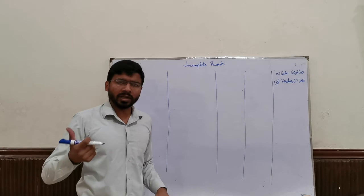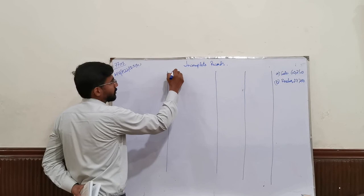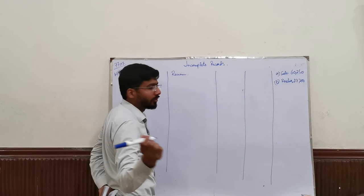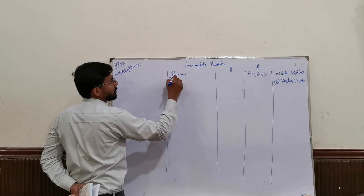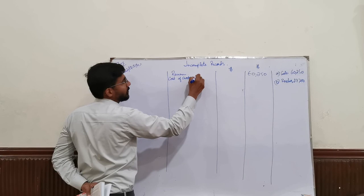As in my previous video, we have already made one income statement. Now we are going to make another income statement. I am simply going to start with revenue, which I have already calculated in part A, and it is 60,250. After this, I am going to calculate cost of goods sold, or cost of sales, or COGS.